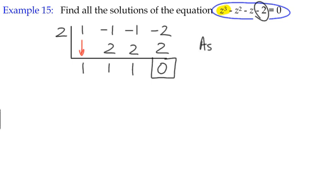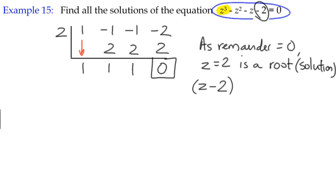So we can reason out what we've just done there, and we can say as the remainder equals 0, then z equals 2 is a root or a solution, depending on the word that you like to use. Another thing that you might also state at this point is the factor. Now if z equals 2 is a solution or a root, then z minus 2 is the related factor, and that's also a good thing to be able to do.